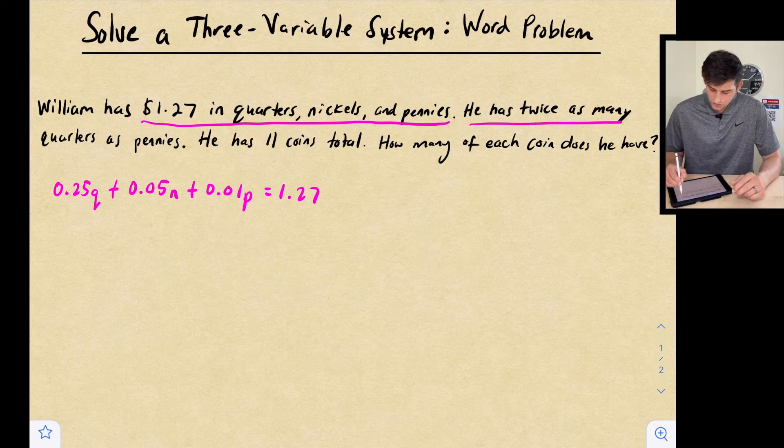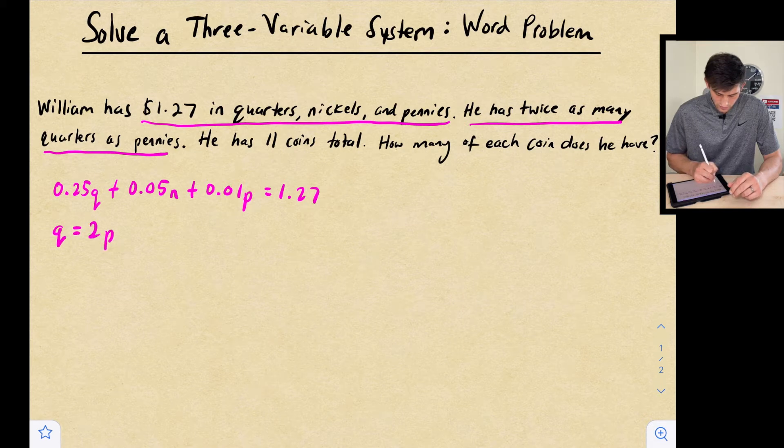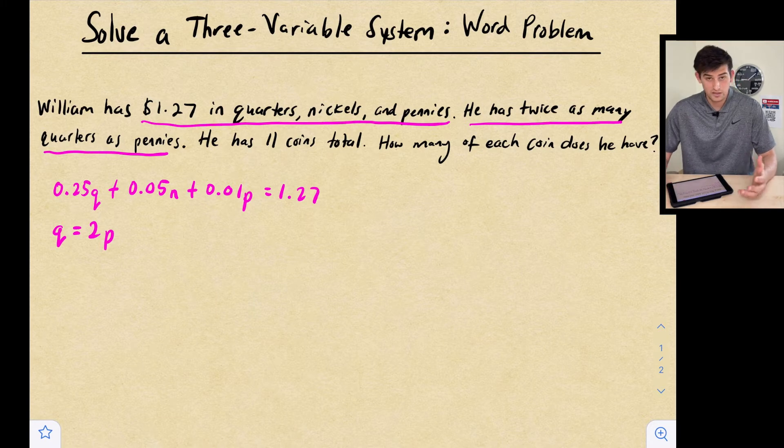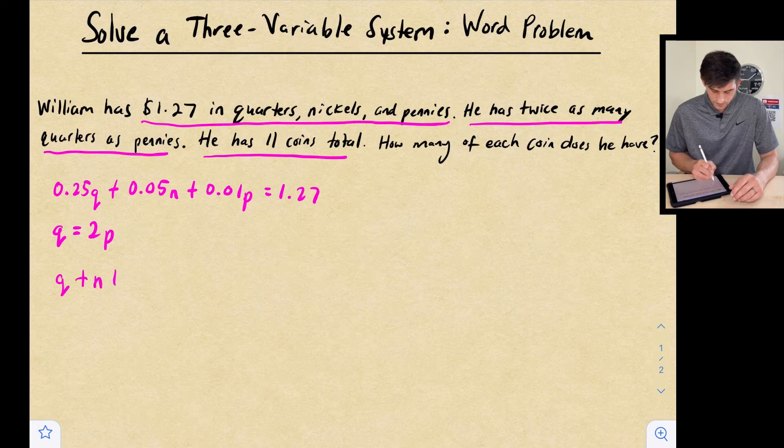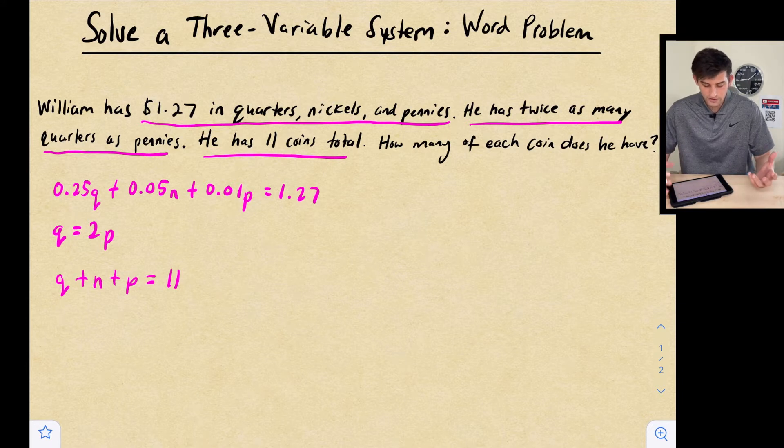Now it says he has twice as many quarters as pennies. So that means our quarters is going to be equal to two times our pennies, right? Twice as many quarters as pennies. So short equation there. And then our last one is he has 11 coins total. So we know that we have some quarters, some nickels, some pennies, and we have 11 total coins. So those are our three equations.